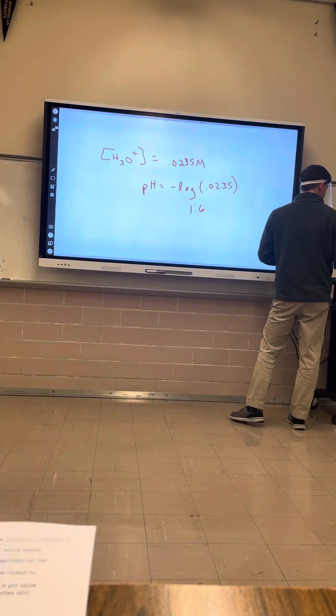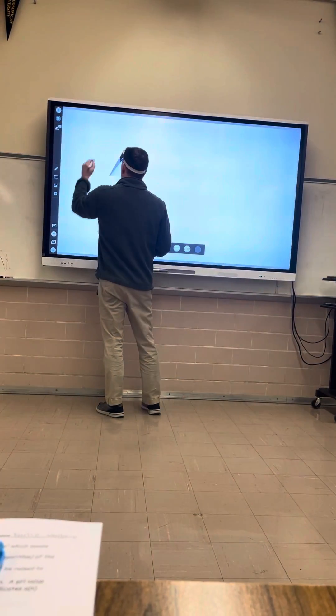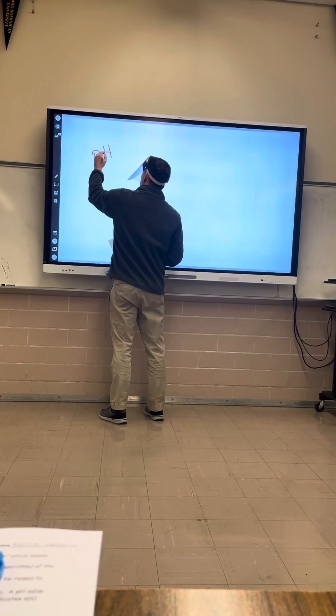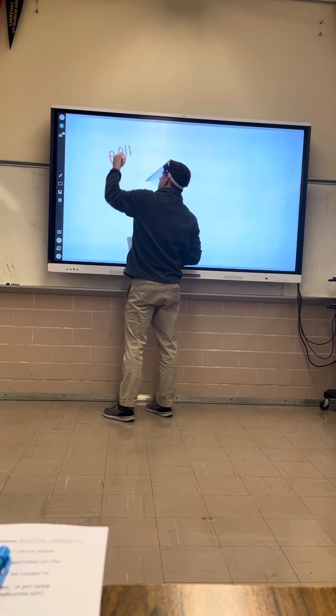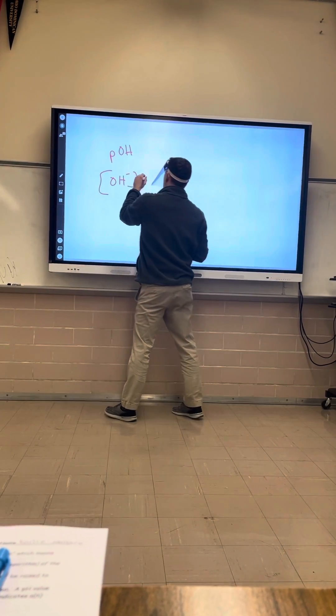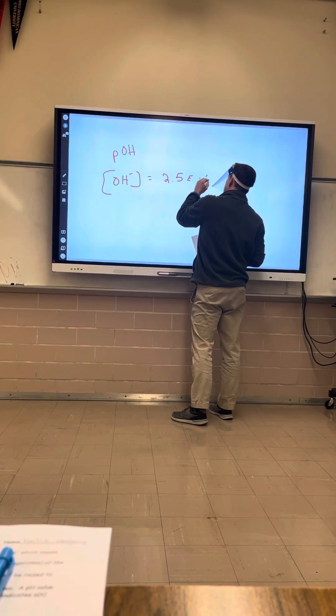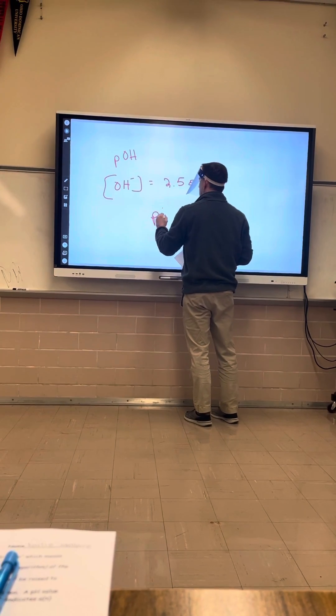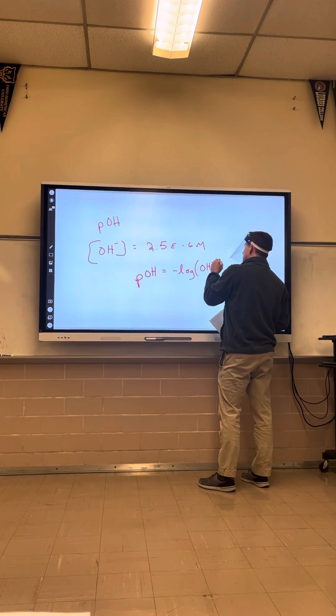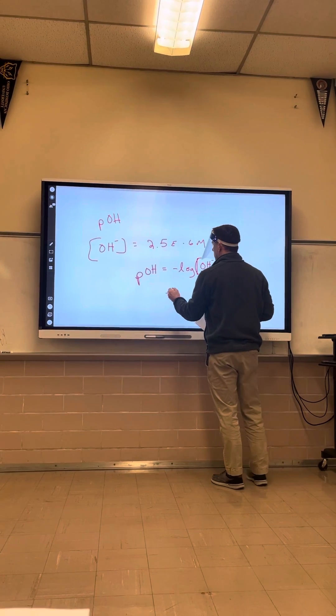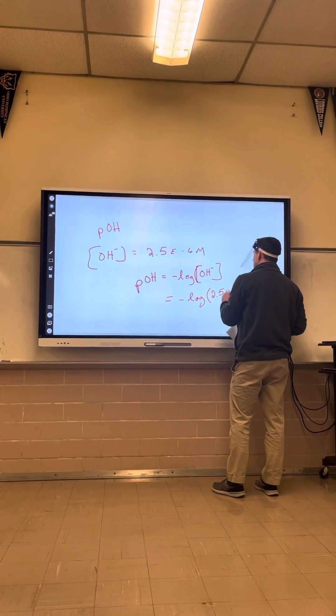And our last example problem. Find the POH if the OH- equals 2.5 E to the minus 6 M. POH equals negative log of OH-, so it equals negative log of 2.5 E to the minus 6.